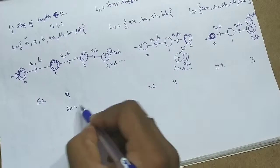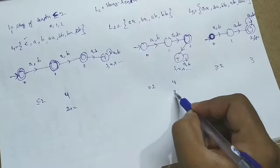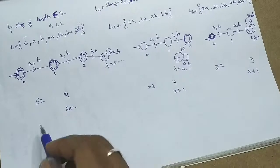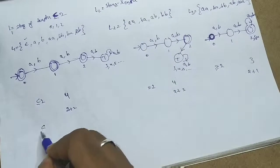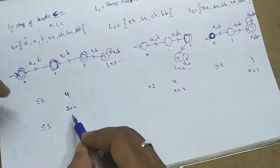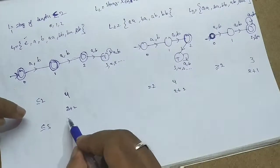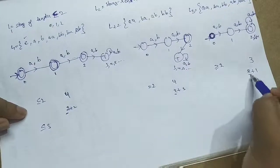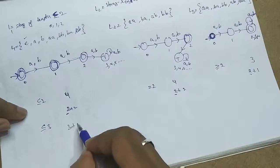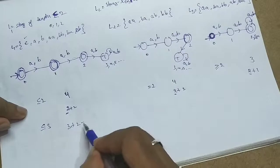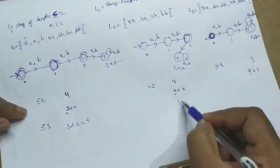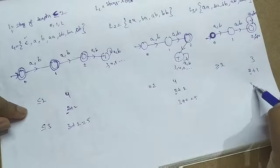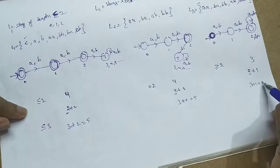If you analyze: for 'less than or equal to 2' it is n+2 states; for 'equal to 2' it is also n+2 states; for 'greater than or equal to' it is n+1 states. So the formula gives us 2+2, 2+2, and 2+1 respectively.